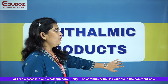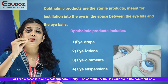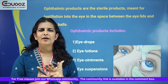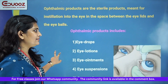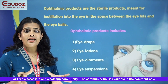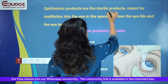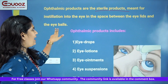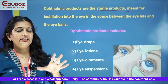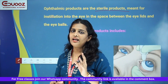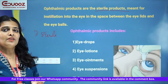Let's start with the introduction. We use sterile products meant for installation into the eye, in the space between eyelids and eyeballs. This is the eyelid and the eyeball — we apply it here. We call these ophthalmic products. The most important feature is sterility — that is the first important feature.